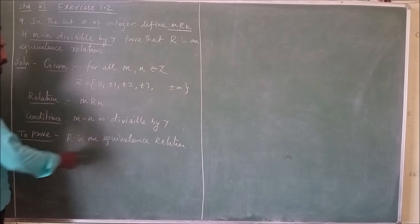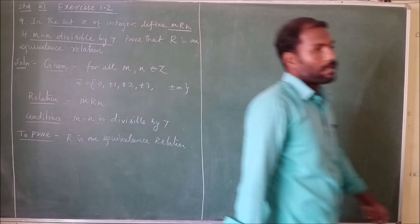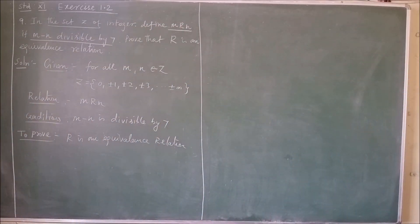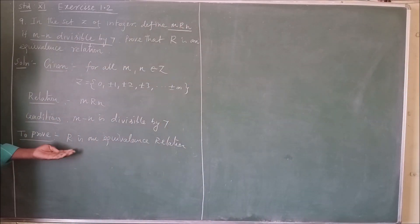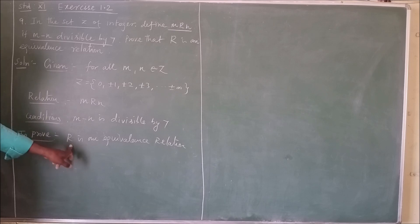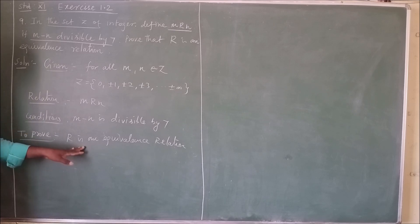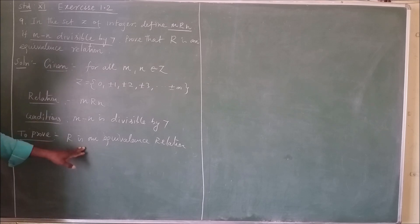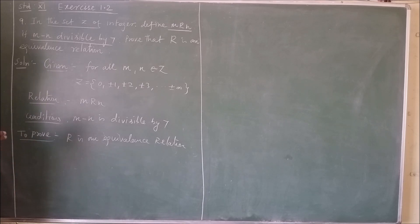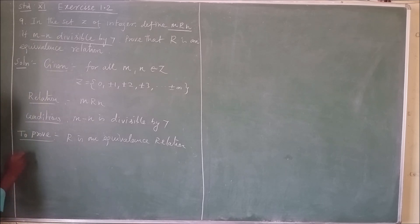What is an equivalence relation? An equivalence relation is nothing but a relation that satisfies three properties: reflexive, symmetric, and transitive. So first, we check reflexive.